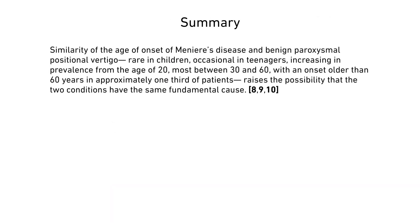The similarity in age of onset of Meniere's disease and benign paroxysmal positional vertigo — rare in children, occasional in teenagers, increasing in prevalence from the age of 20, most between 30 and 60 years with an onset older than 60 years in approximately one third of patients — raises the possibility that the two conditions have the same fundamental cause.